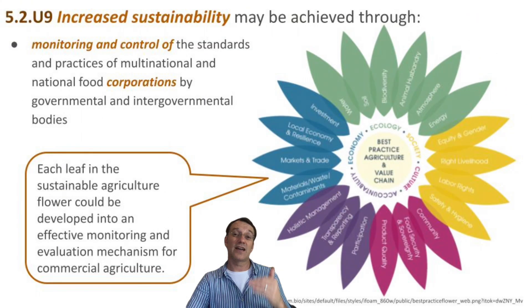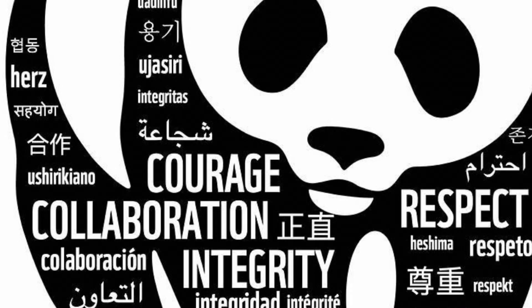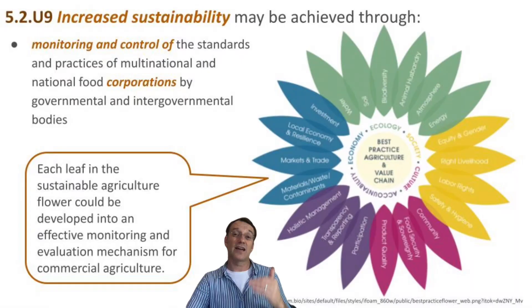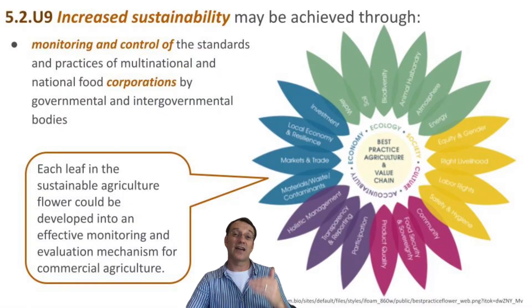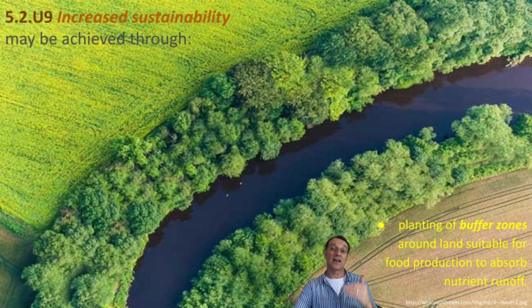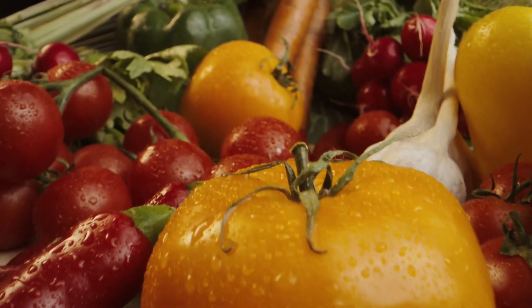Ensuring sustainable food production isn't just up to farmers — it requires oversight and cooperation. Government agencies and international organizations play a big role in setting and enforcing standards, from soil health and water use to biodiversity and fair labor practices. Buffer zones around farmland can be a simple but effective way to reduce agriculture's environmental impact. These areas of natural vegetation capture excess nutrients and sediment before they can pollute waterways, showing how we can work with nature to make farming more sustainable through soil conservation practices.